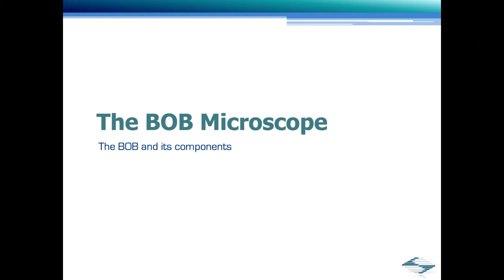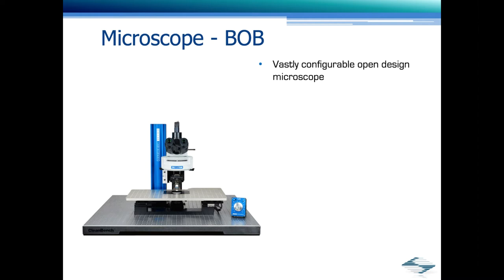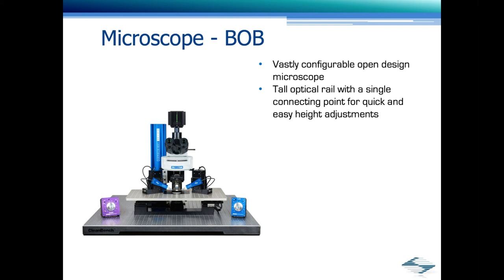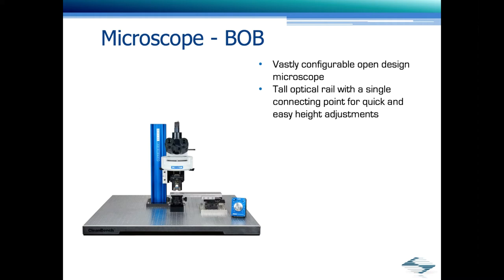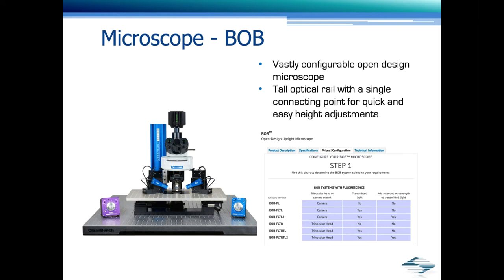Another microscope option is the BOB. The BOB is a compact, vastly configurable, upright microscope platform ideal for a variety of applications, including slice electrophysiology. As you can see from the illustration, there are many different components that can make up a BOB. The tall optical rail with a single connecting point for quick and easy height adjustments is what makes the BOB unique. For a step-for-step listing of all the available options, you can visit the BOB configuration page on our website and go through all the different components.